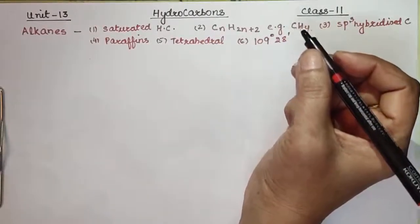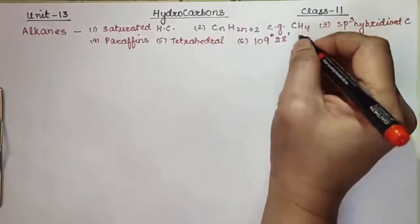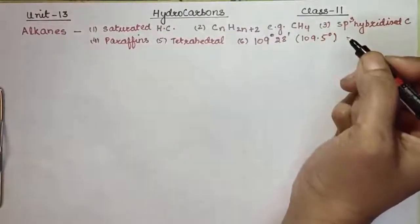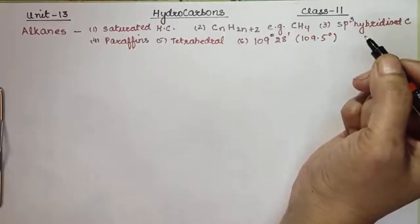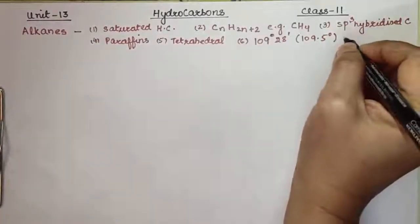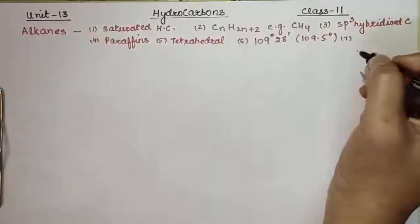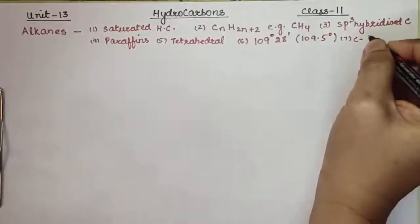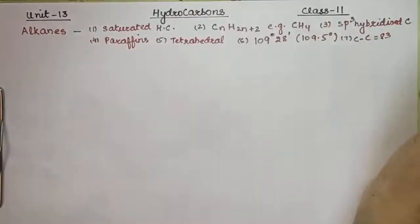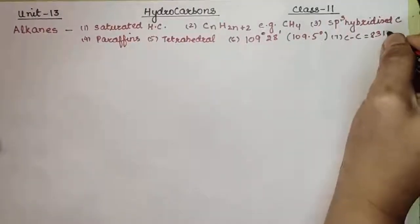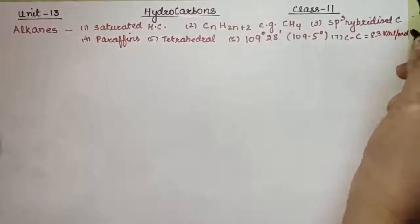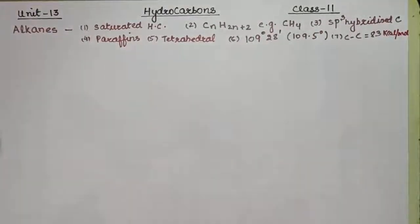The bond angle can also be expressed as 109.5 degrees. When we talk about bond dissociation energy for the carbon-carbon bond, the bond dissociation energy is about 83 kcal per mole.